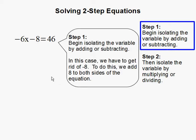Step 1: Begin isolating the variable by adding or subtracting. And this means to get x by itself, and we are to get rid of the number surrounding x. And we're going to start by getting rid of minus 8.